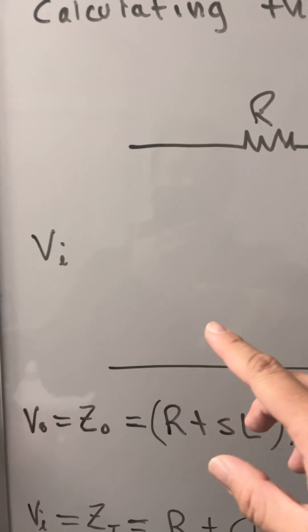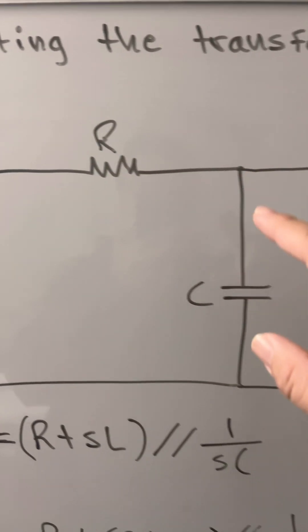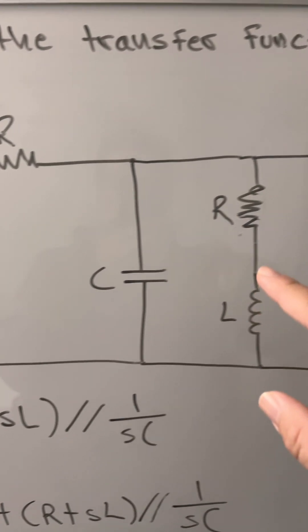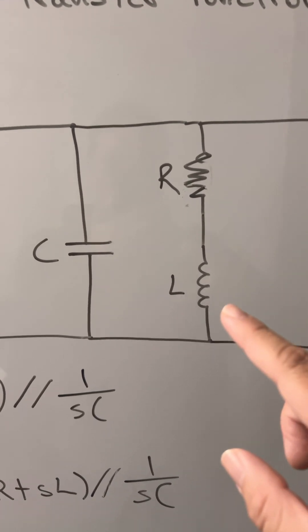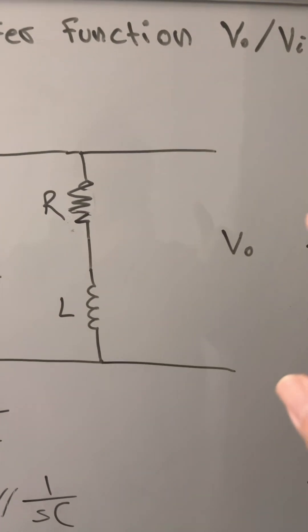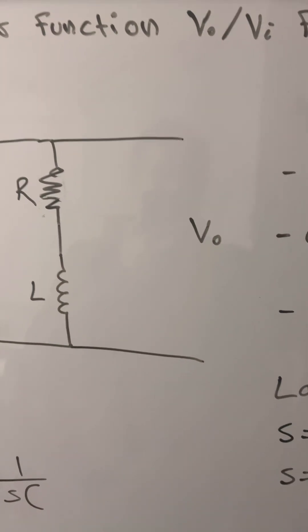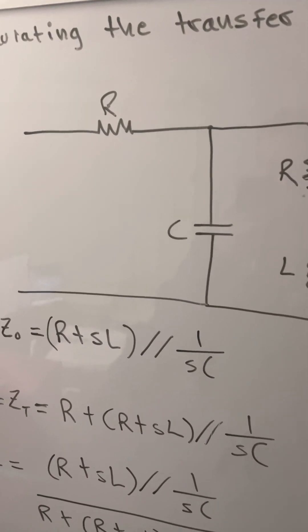So we have V input, we have a resistor, we have a capacitor, we have another resistor, and an inductor, and the V output. So in order to solve for this circuit,